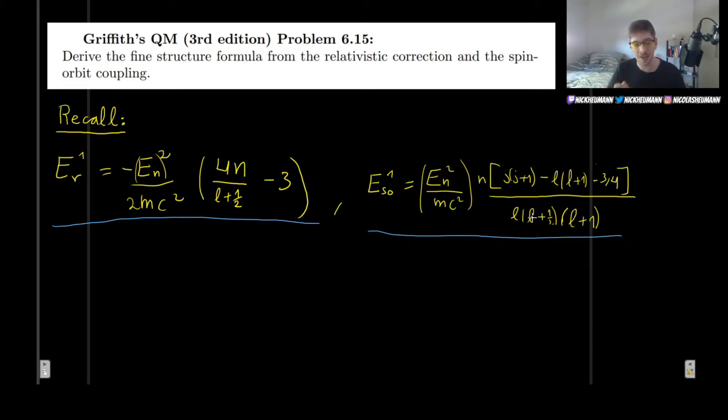And for the spin-orbit coupling I already introduced the expectation value of 1 over R cubed, which was the only thing that was remaining where we had left off. But since in the previous video we solved another problem in Griffith's quantum mechanics book where we used Cramer's relation to determine the expectation value of 1 over R cubed, I just plugged it in here right away. If you're not sure, just go back to the video about the spin-orbit coupling and plug in the result that we have from the previous video.